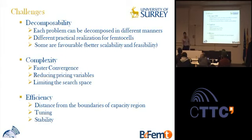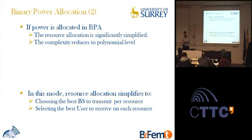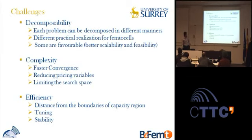A question was raised about the simplification: choosing the best base station and then selecting the best user. In the original problem, different base stations could transmit simultaneously on different resources, which created the coupling factor. By applying binary power allocation, this coupling is removed, making it easier to update in the resource allocation domain.